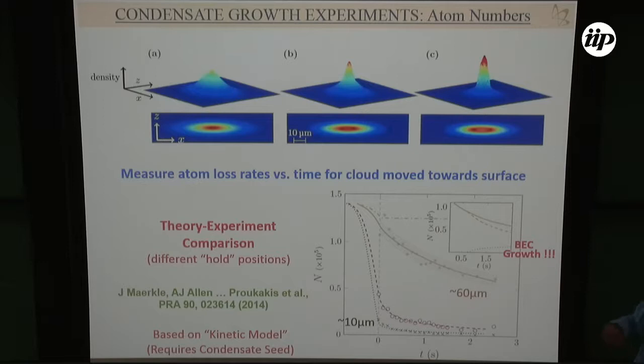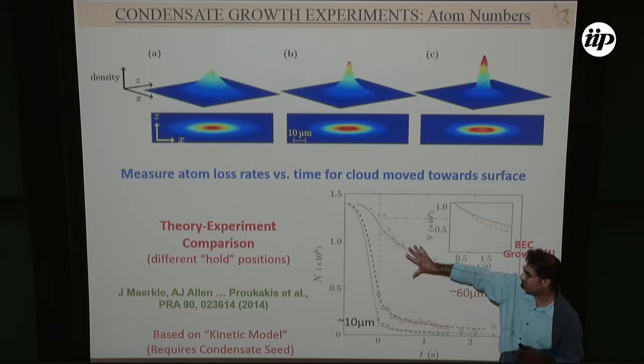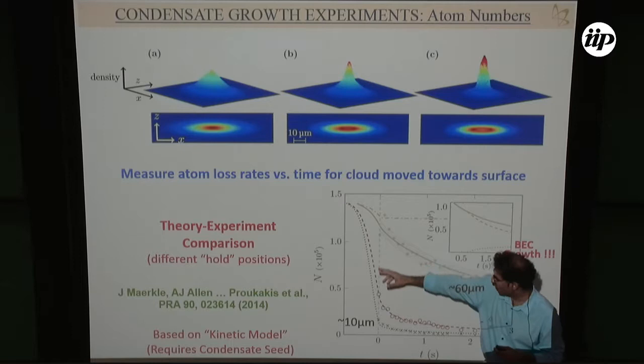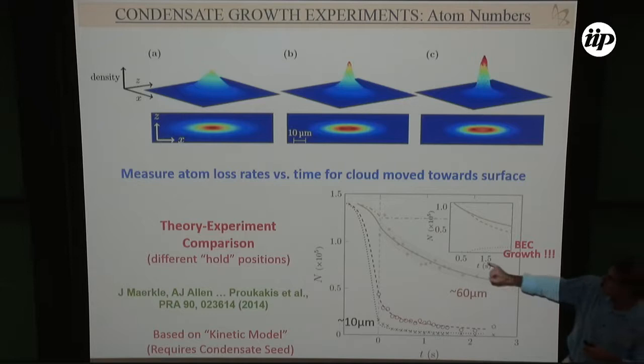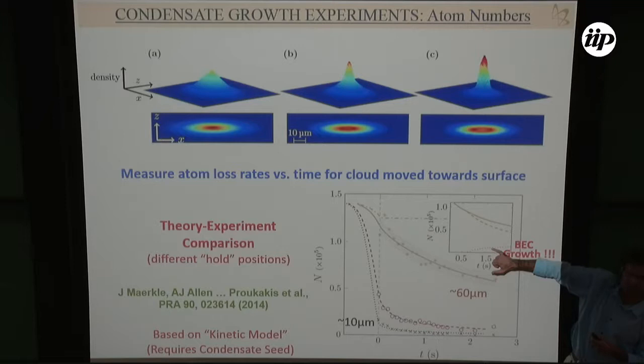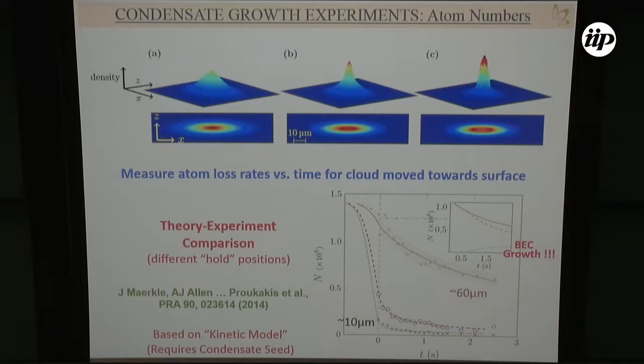Here's an experiment showing the number of atoms in the system as you move close to the surface, for three different hold positions — experimental data and our theoretical predictions. Notably, even though I have a seed of condensate, you can see that I start at essentially zero and get my condensate growth. It's quite remarkable that you can use a mean-field-based kinetic equation with a numerical seed to describe such processes.